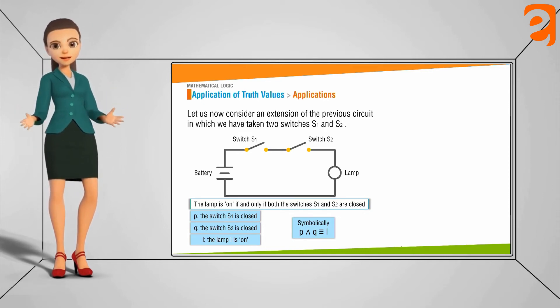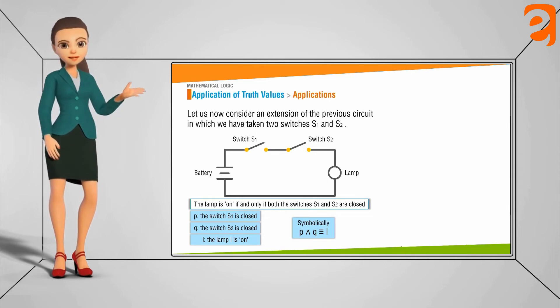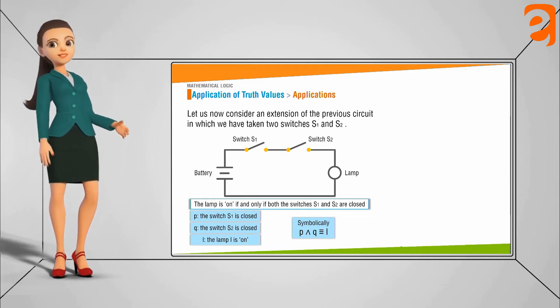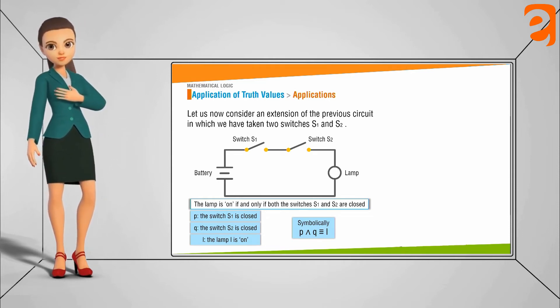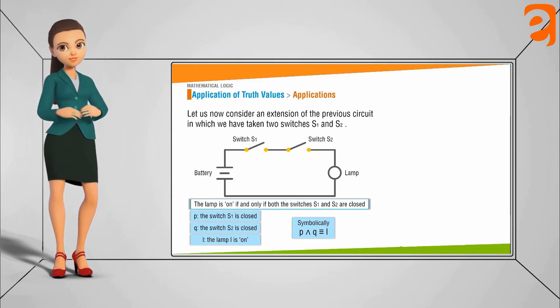So when these statements are said to be logically equivalent, when P and Q is equivalent to L, means the switch S1 is closed and the switch S2 is closed is logically equivalent to the statement that the lamp L is on.